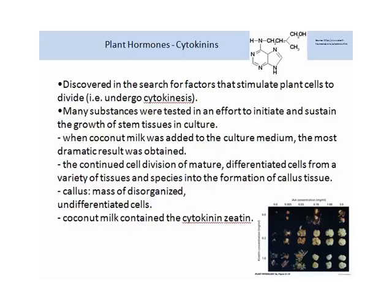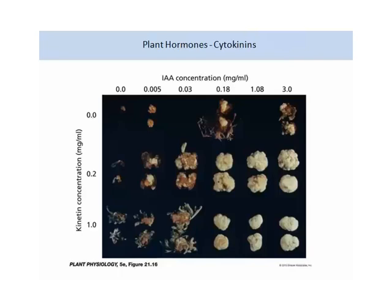The coconut milk induced continued cell division of mature differentiated cells from a variety of tissues and species, forming what is called callus tissue — a mass of disorganized, undifferentiated cells. It turned out that coconut milk contained the cytokinin zeatin. The image on your slide shows the results from these experiments with the addition of cytokinin and the resulting callus growth.